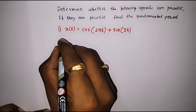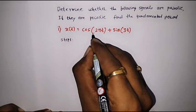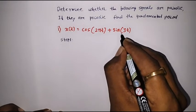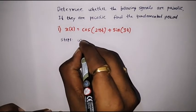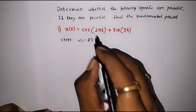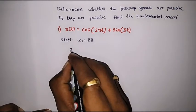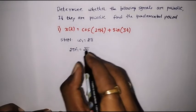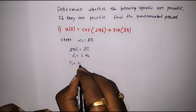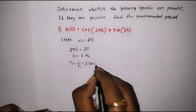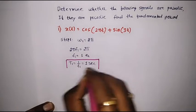The first step is to calculate the fundamental period of each signal. This is the first signal x1(t), and this is the second signal x2(t). We will find T1, the fundamental period for the first signal. Here omega1 is equal to 2π, because we can represent the signal as cos(ωt), so omega equals 2π. We know that omega is 2πf1, which equals 2π. Therefore f1 equals 1 Hz, and T1 is equal to the reciprocal of frequency, that is 1 second. This is the fundamental period of the first signal.